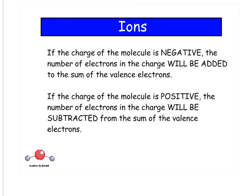Ions. If you're drawing a Lewis structure for ions, the number of electrons has to equal the charge. So if you have a negative charge, you need to add those to your total sum. If the charge of the ion is positive, then you need to subtract those from the sum.